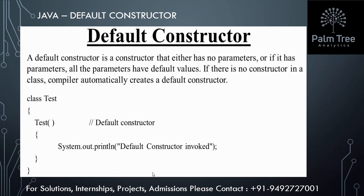Default constructor is also the same as a no-argument constructor. A no-argument constructor is a constructor that takes no arguments, and it is also known as the default constructor. It is a special method that is used to initialize objects when they are created.